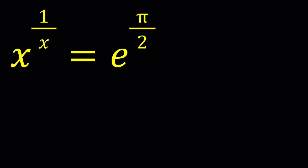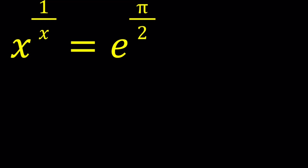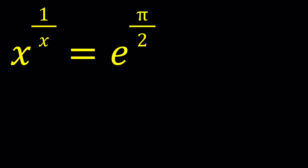Before we get started with the solution, I just want to show you something. A lot of times with equations, we can take a look at the graph to find out about intersection points, if there are any solutions, or how many solutions there are, and so on. It doesn't give us the exact solutions all the time, but it gives us an idea of how these two functions interact. So let's take a look at the graph of y equals x to the power 1 over x, along with the horizontal line y equals e to the power pi over 2, to get a better understanding.